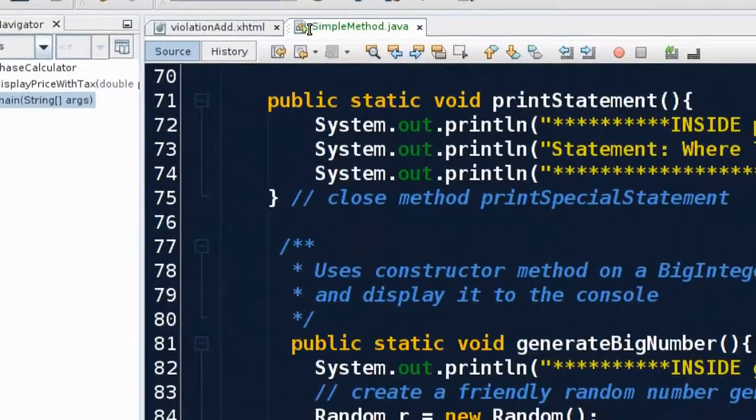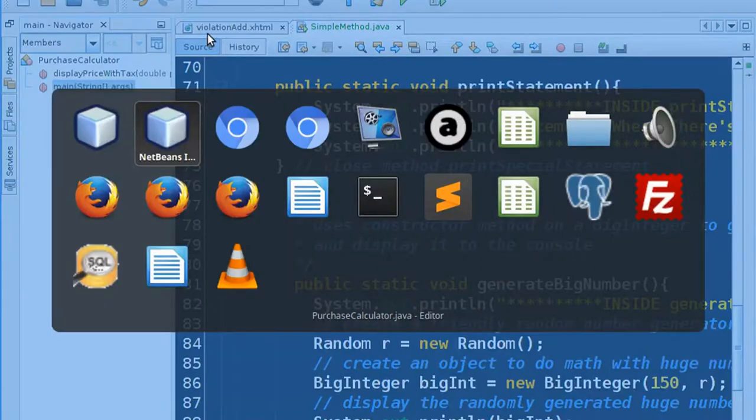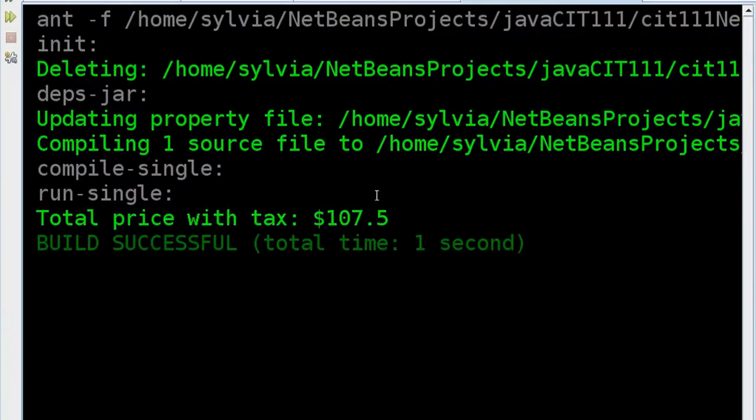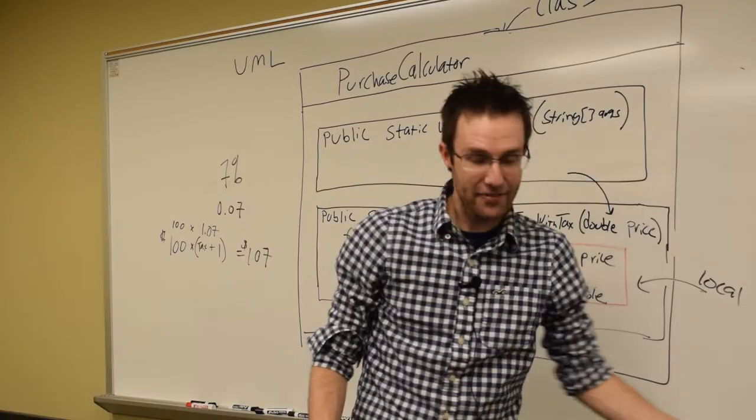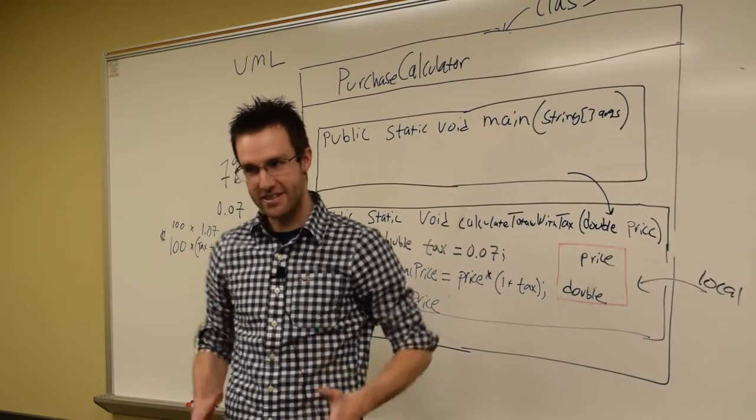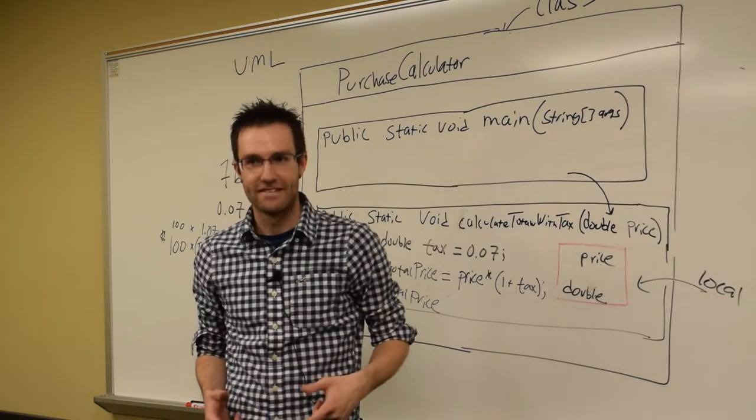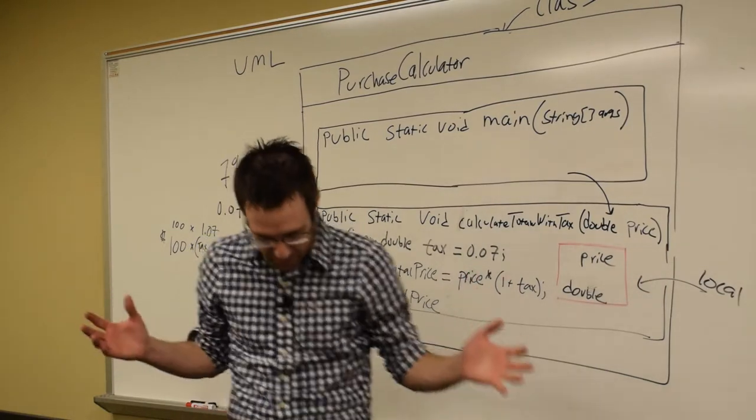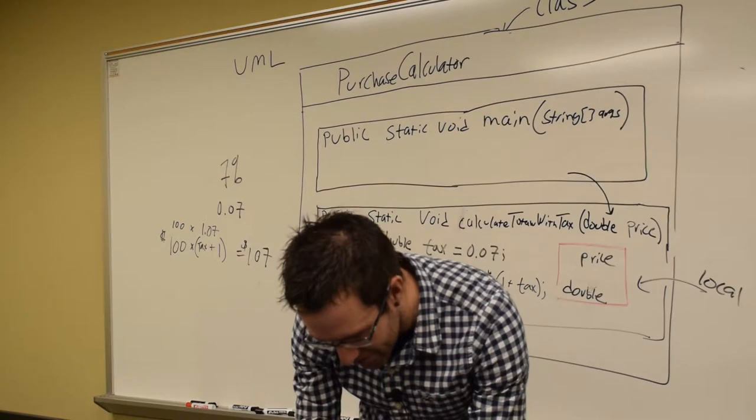Ooh. Ooh, look at that. We don't have to make a variable? We don't have to make it variable. The method just needs a double. That is so cool.